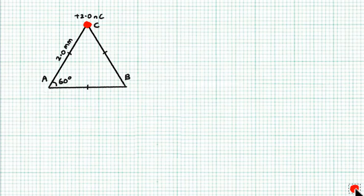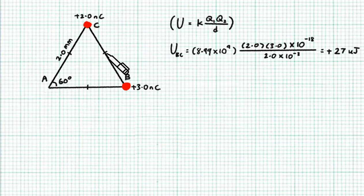Let's now bring in charge B from infinity and we push it towards charge C and then fix it at position B. Now we have to do work to bring these two positive charges close together and the amount of work done is the EP stored between these two charges, given by the formula KQQ over D. So just substitute the numbers into the formula and you get the EP stored between charges B and C to be a positive 27 µJ.